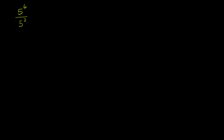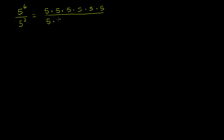Let's do some exponent examples that involve division. Let's say I were to ask you what 5 to the sixth power divided by 5 to the second power is. Well, we could just go to the basic definition of what an exponent represents. 5 to the sixth power is 5 times 5 times 5 times 5 times 5 times 5 — that's 5 times itself 6 times. And 5 squared is just 5 times itself 2 times, so it's 5 times 5.